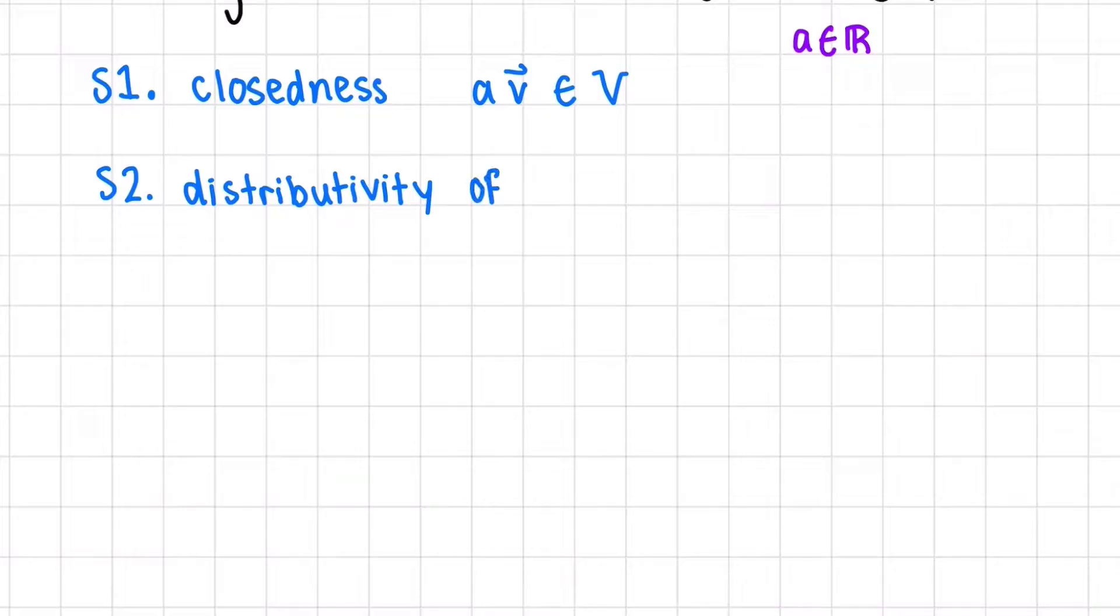Next, we have distributivity of scalar multiplication. This means that if we have a sum, V plus W, we'll say, multiplied by a scalar, A, which is the same as doing A times V plus A times W.